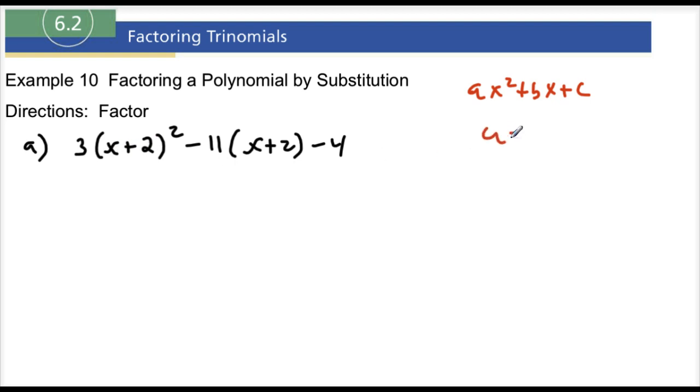Let's say if u was x plus 2. Say if I replaced all of the x plus 2's with u. That means that this would become 3 times u squared minus 11 times u minus 4. Do you see that there? If I replaced the x plus 2 with u, now it's 3u squared minus 11u minus 4.